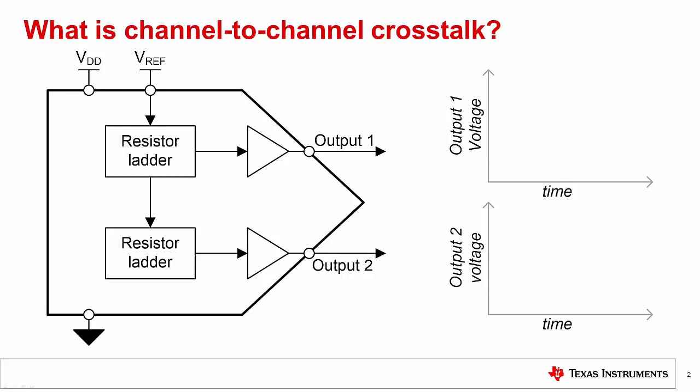DC crosstalk is where the potential of one channel causes a static change in another channel. This is usually measured in volts as a DC potential.